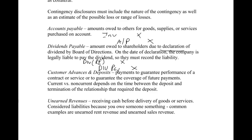Customer advances and deposits are payments to guarantee performance of a contract or service, or to guarantee the coverage of future payments. Whether they're current or non-current depends on the time between the deposit and the termination of the relationship that required that deposit.